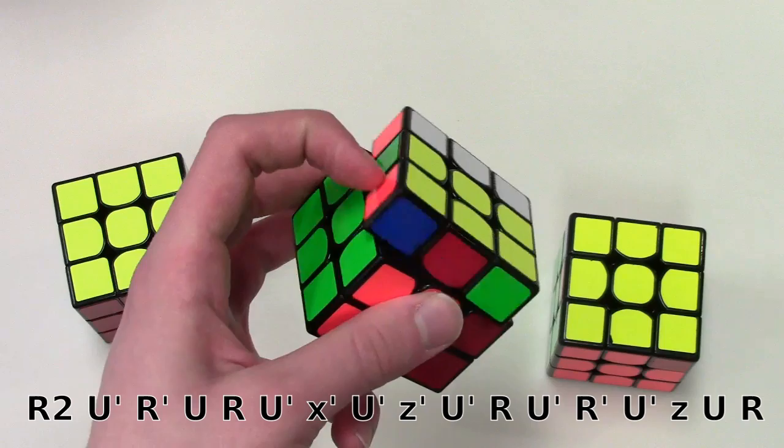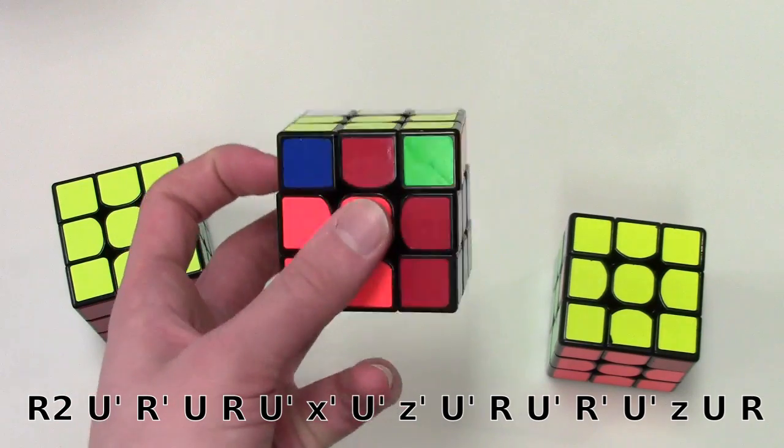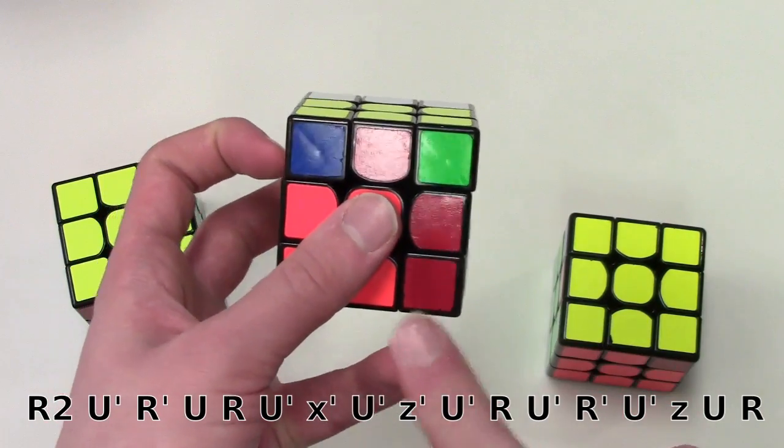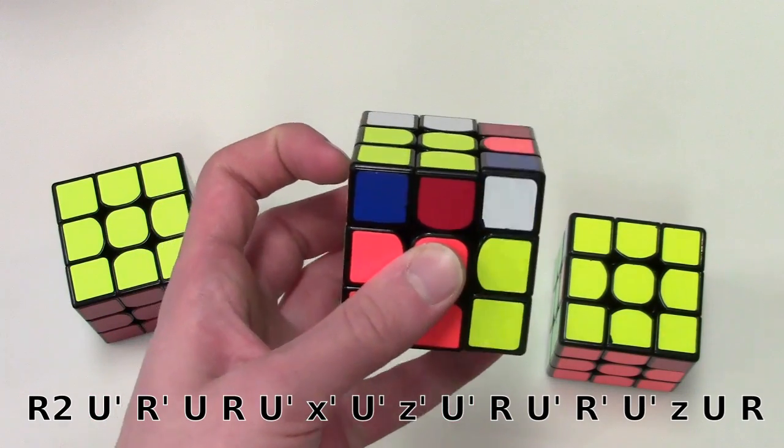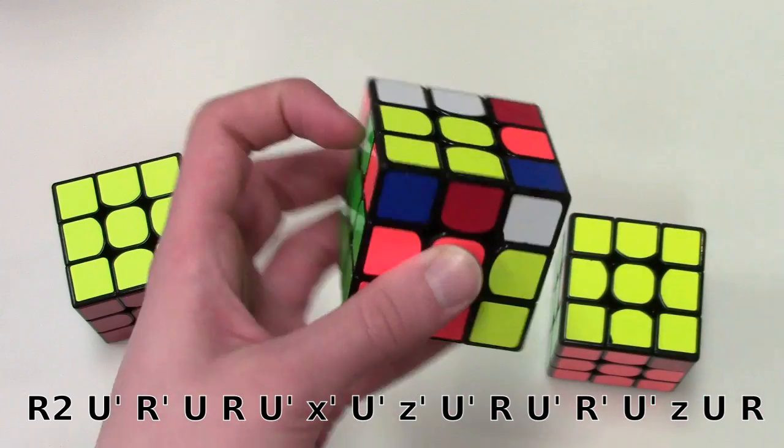Next I have to do U', that one's quite easy. Now as you can see right now my pinky is ready to do an R'. I keep it there so that I can do the R' very quickly. Now my finger here is ready to do the U move.